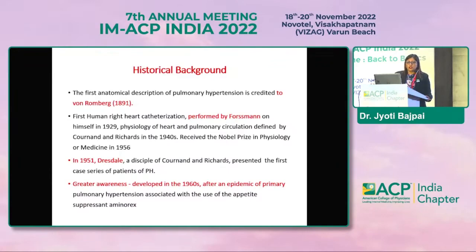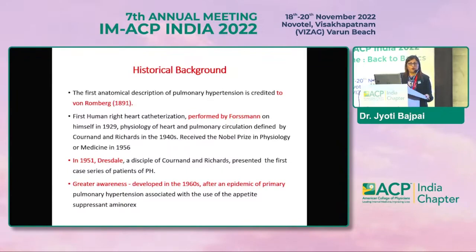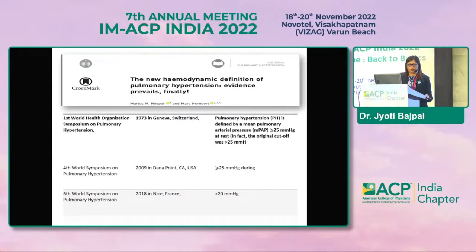Regarding the historical background of PH: the first description was given by von Romberg in 1891. The first human right heart catheterization was performed by Forssmann on himself in 1929. His two students, Cournand and Richards, built on this work and received the Nobel Prize in Physiology in 1956 for their studies of pulmonary circulation. In 1951, Dresdale described case series of PH. In the 1960s, a pulmonary hypertension epidemic occurred due to aminorex, an anorexic agent. The first World Symposium on PH was held in 1973 in Geneva, Switzerland, and they defined pulmonary hypertension based on right heart catheterization.